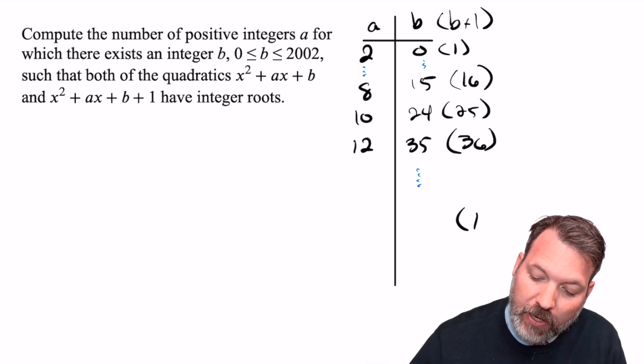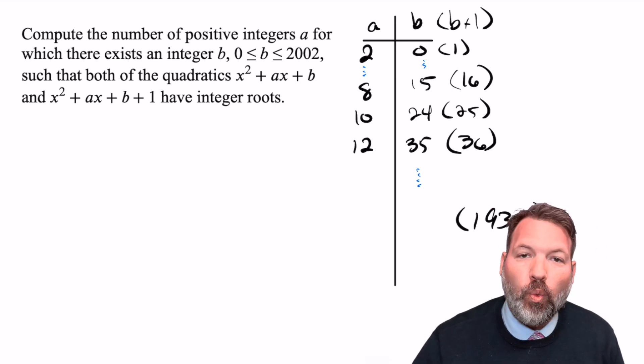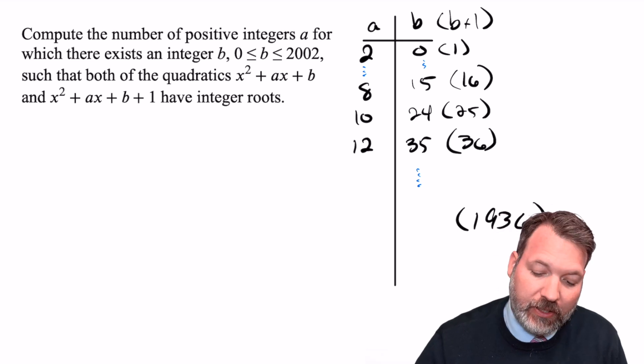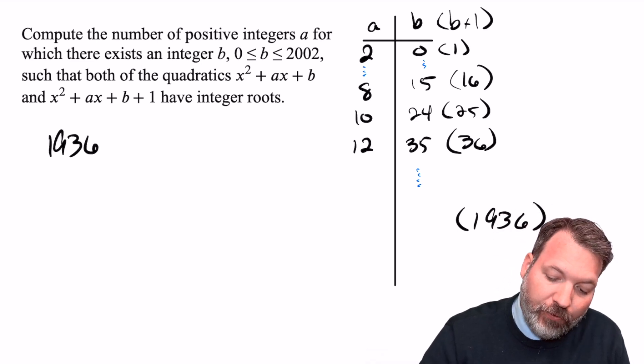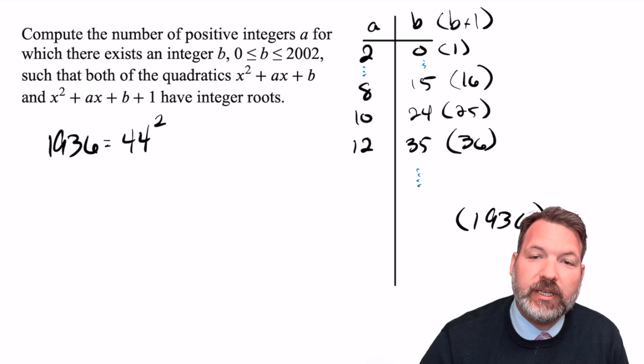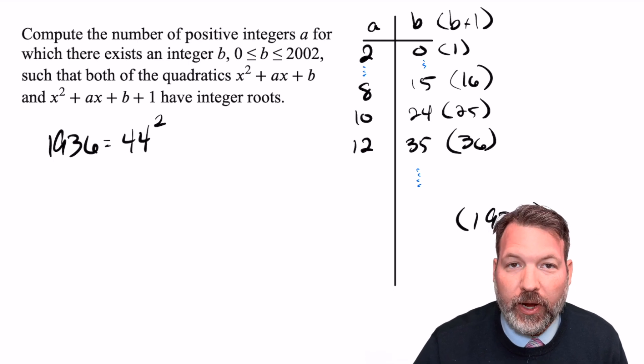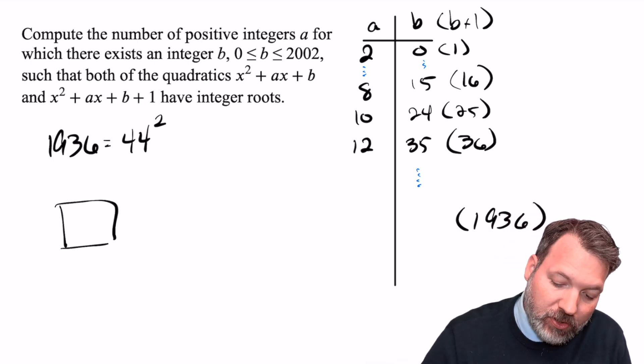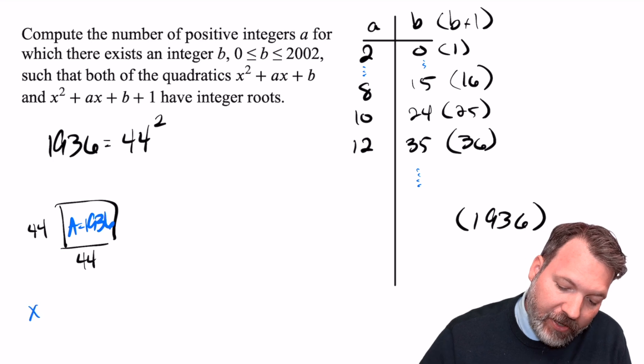And I'm reasonably sure that last perfect square is 1,936 coming from 44 squared. 1936 is equal to 44 squared.